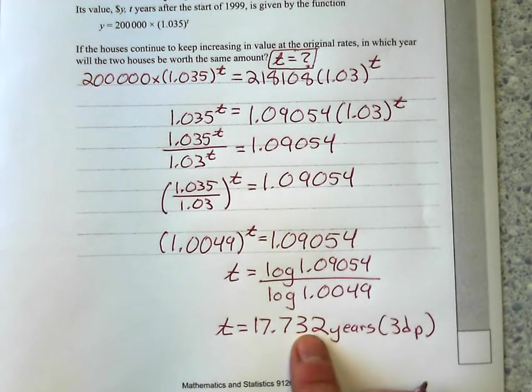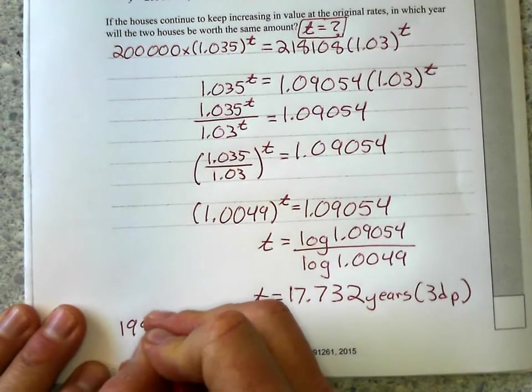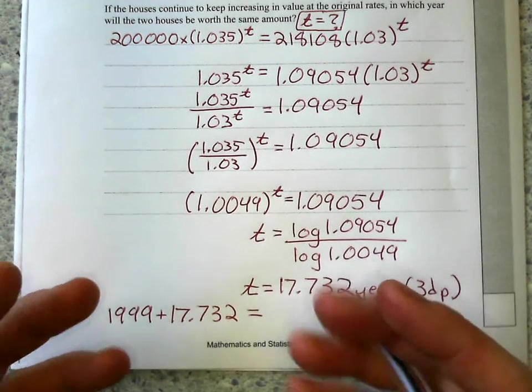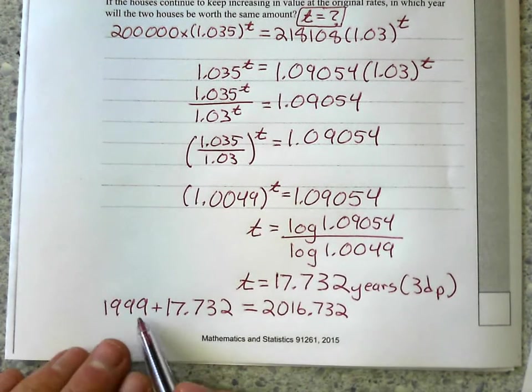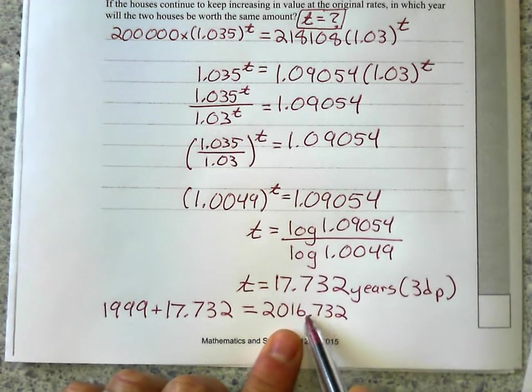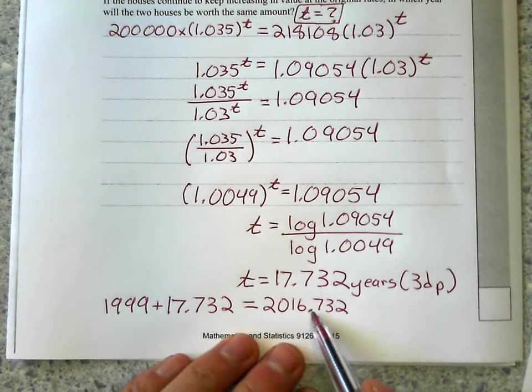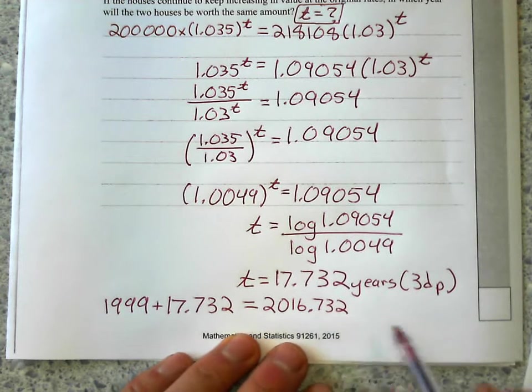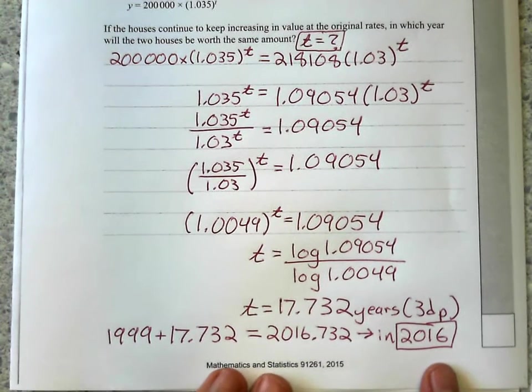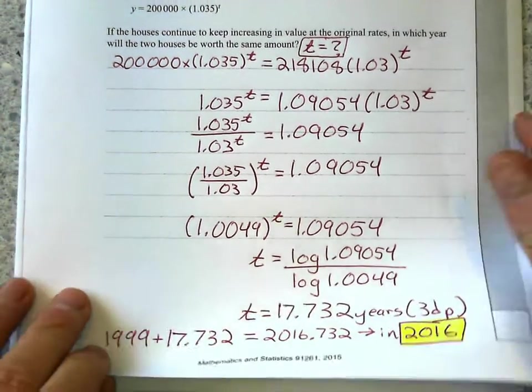Now, are you still going to get it right if you round this to 18? I'm not sure. We'll find out next year what the marking schedule says. I would say leave it like this and just say 1999 plus that 17.732 years will give you the answer. Because we don't want to round this too much. So here's what I mean. I add that on to 1999, and in which year? It's going to be just after midway of 2016, not 2017. So if I rounded that to 18 years, that would have given me an answer of 2017. And actually, they become the same price just after July of 2016. So I'm going to say in 2016, they become roughly the same price. Okay? So that's question one of 2015 Algebra Level 2 exam. All right? Thanks for watching.